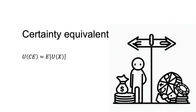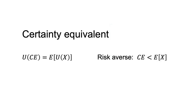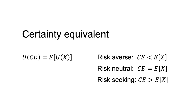One useful concept in the analysis of attitudes to risk is the certainty equivalent. The certainty equivalent, CE, of a gamble X is the amount of money such that you are indifferent between taking the gamble and taking the money. That is, the utility of the certainty equivalent is equal to the expected utility of the gamble. For a risk-averse person, the certainty equivalent of the bet is less than the expected value of the gamble. The certainty equivalent equals the expected value in the case of risk neutrality. A risk-seeking person would have a certainty equivalent higher than the expected value of the gamble.